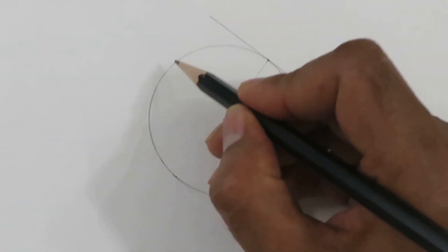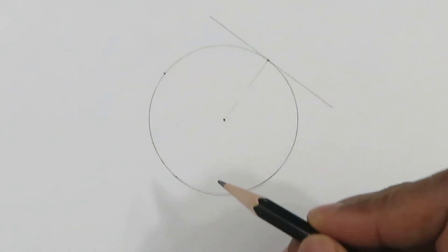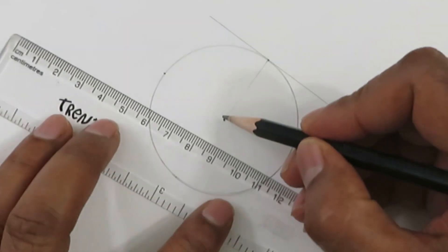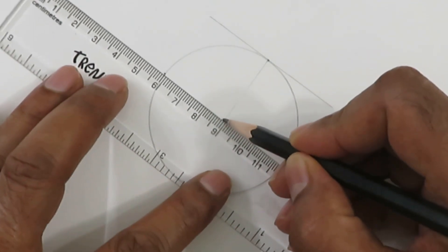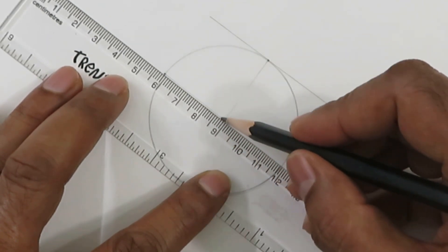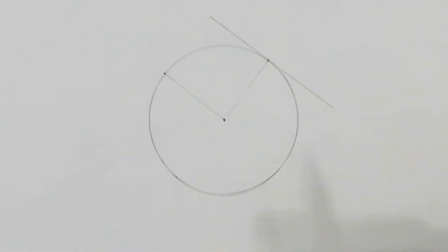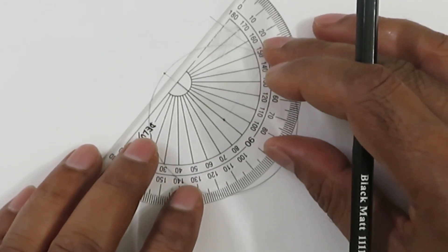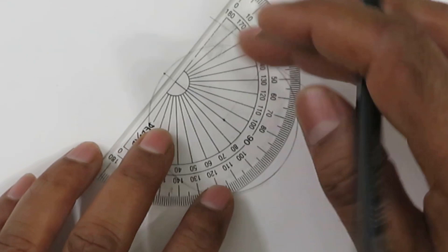You can do it at any place, any point. You need to know the center. You connect the point with the center and then you can use your protractor to draw a tangent.